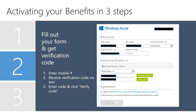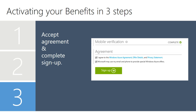That will take you to the sign-up page. Simply fill out the form, much of which may already be completed for you, and in the Mobile Verification section, enter your mobile phone number. Click Send Text Message, and Microsoft will send you a text containing a verification code. Once you receive that code, enter it and click Verify Code. Once that's complete, simply check the first box to accept your Azure agreement, and then click the Sign Up button.